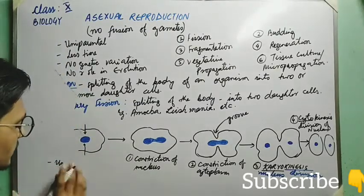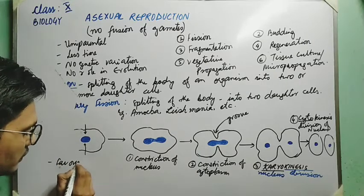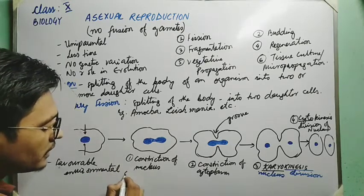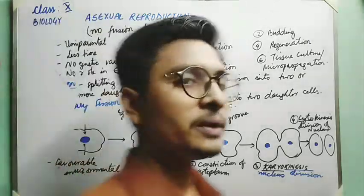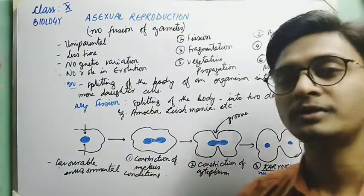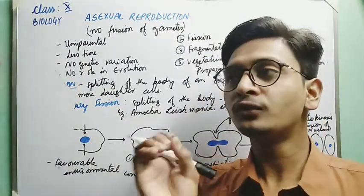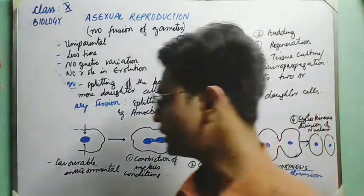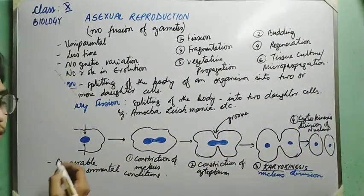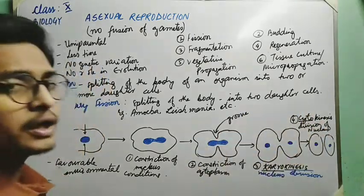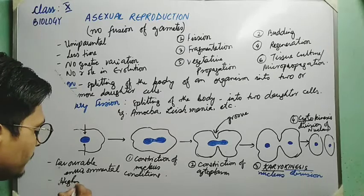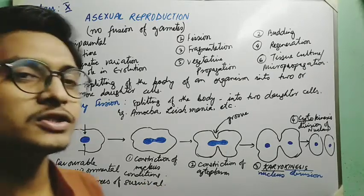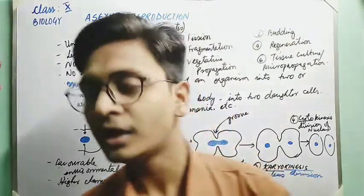This binary fission takes place under favorable environmental conditions — this is an important point to keep in mind. Favorable environmental conditions means there is enough food, enough water, and minerals available for the amoeba. When conditions are favorable, binary fission occurs, and the new amoeba produced will have higher chances of survival in the environment because they are reproducing under favorable conditions.